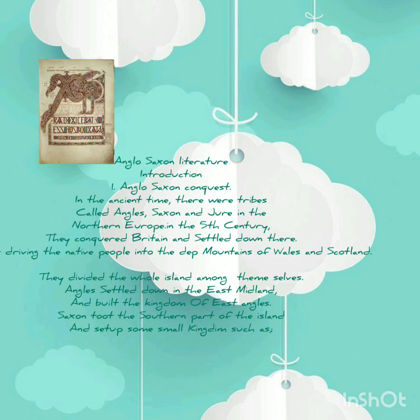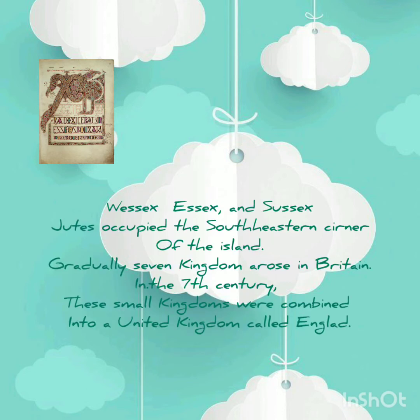They divided the whole island among themselves. The Angles settled down in the East Midlands and built the kingdom of East Anglia. Saxons settled in the southern part of the island and set up small kingdoms such as Wessex, Essex, and Sussex. The Jutes occupied the southern corner of the island. Gradually, seven kingdoms arose in Britain, and in the 7th century these small kingdoms were combined into a united kingdom called Angle-land.